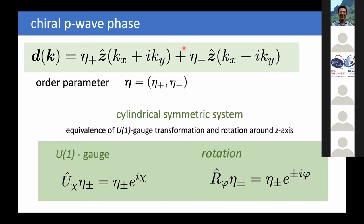We can parameterize the chiral P-wave state by the positively chiral state and the negatively chiral state with order parameter components eta-plus and eta-minus — complex order parameters as used in Ginzburg-Landau theory. An interesting aspect of this state is that if the system has cylindrical symmetry, there is an equivalence between a U(1) gauge transformation and a rotation around the C-axis. If I do a U(1) gauge transformation, I multiply the order parameter by a phase; rotating an Lz=1 state around the C-axis gives nothing else than a phase.